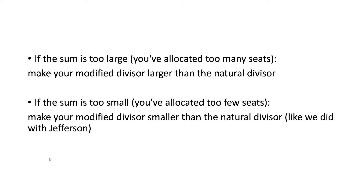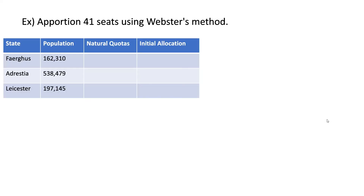These are some tips for when you're modifying divisors using Webster's method. If the sum is too large, meaning you've allocated too many seats, make your modified divisor larger than the natural divisor. If the sum is too small, meaning you've allocated too few seats, make your modified divisor smaller than the natural divisor. This is just like we did with Jefferson's method.